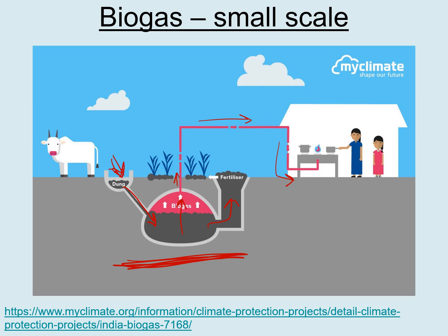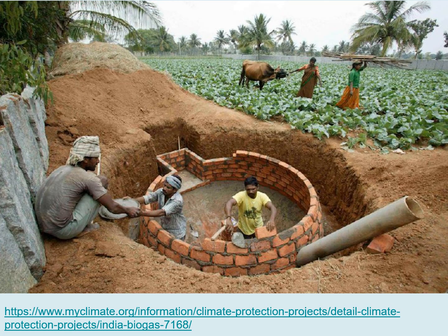Any waste comes out of an outflow and can be used as fertilizer for crops. There's a real-life photo of men building their own community biogas system. The pipe is where waste goes in, the chamber is where biogas is produced, and the fertilizer comes out the other end. They finish by building it into a completely enclosed dome, covering it in concrete and burying it underground — so it doesn't even take up any visible space.